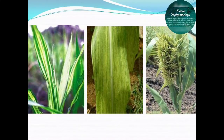Now we are going to see the symptoms of this downy mildew pathogen. Initially, chlorotic streaks appear on the leaf and white fungal growth is seen on both surfaces of the leaf — that is, on the upper surface as well as the lower surface — consisting of a powdery whitish mycelial growth. We can easily identify the chlorotic streaks on the lower surface of leaves.